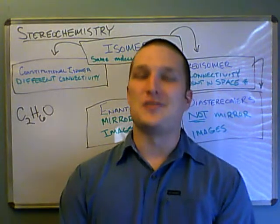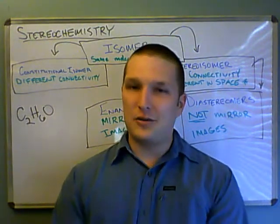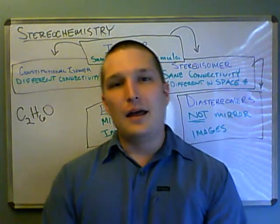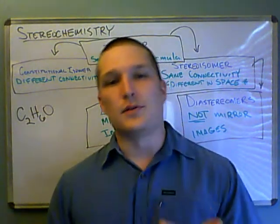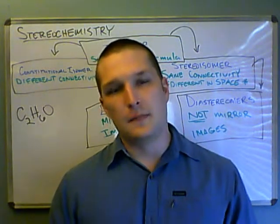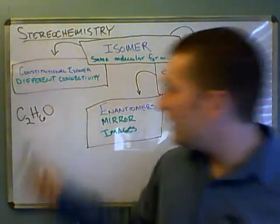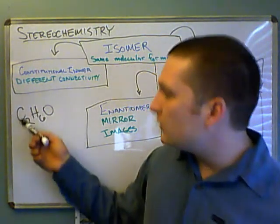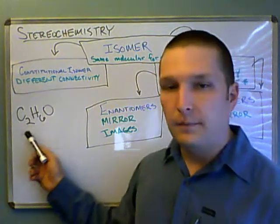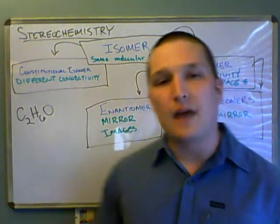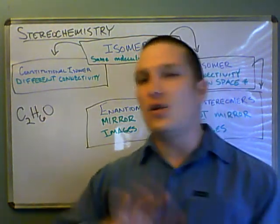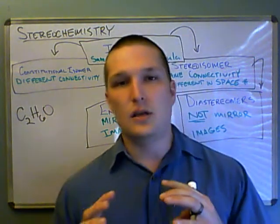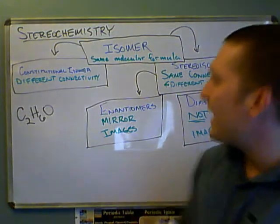Stereochemistry. In order to understand stereochemistry, we need to understand what isomers are. Two molecules are isomers if they have the same molecular formula. For instance, C2H6O is a molecule with two atoms of carbon, six atoms of hydrogen, and one atom of oxygen. Those atoms can be arranged in all different kinds of ways, and depending on how they're arranged determines what type of isomer we have.